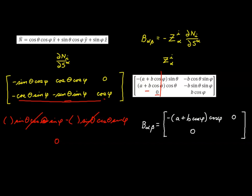A quick note: we could have saved time because we know the curvature tensor is symmetric. So element (1,2) will always equal element (2,1). Once you've calculated one, you know the other, so in future problems you can simply write it in directly.